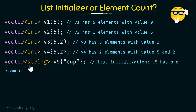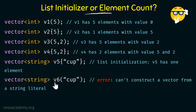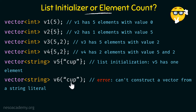Vector v5 of type string has "cup" within curly braces — this is a list initialization, so v5 has just one element with the value "cup". Next, vector v6 of type string has "cup" within rounded brackets — this would throw an error because we cannot construct a vector from a string literal using rounded brackets. With rounded brackets we should specify the size or count, not a string literal, so this vector cannot be constructed.